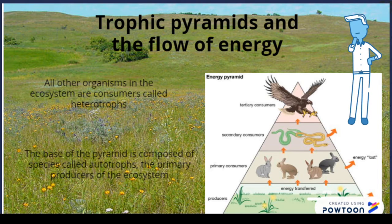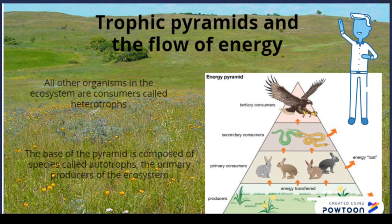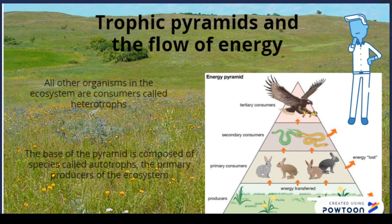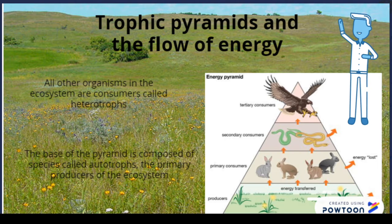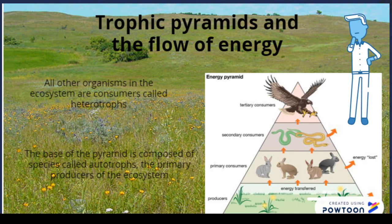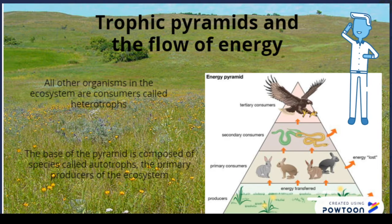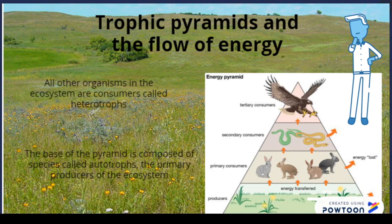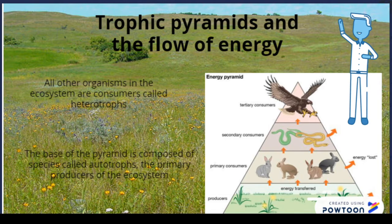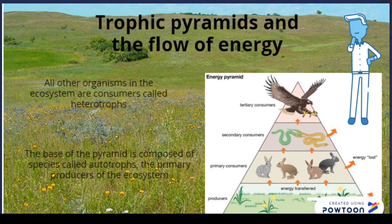In this instance, we show the rabbits, snakes, and hawks — how the rabbits would feed on the grass, and then the snakes would feed on the rabbits, and the hawk feeds on the snake, thus producing the pyramid of energy.